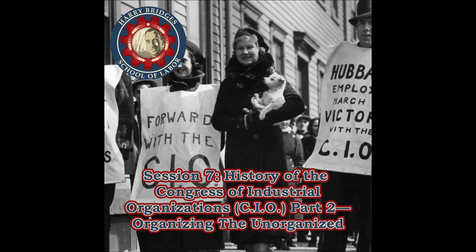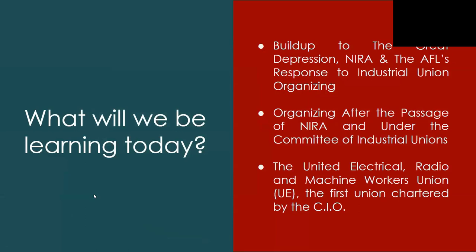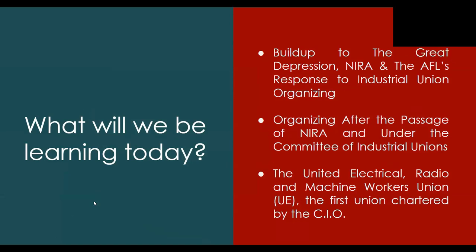As we go through the slides, we're going to see just how outdated, even then in the 1920s, the model of craft unionism was. We'll see that there are bought-off elements who don't want to see it go because it benefits them. This session will be broken up into three sections: the buildup to the Great Depression, the National Industrial Recovery Act, and the AFL's response to industrial union organizing. Then we'll go into organizing after the passage of the NIRA and under the Committee of Industrial Unions. Our final section will be on the first union chartered by the CIO — the United Electrical Radio Machine Workers Union, or the UE.